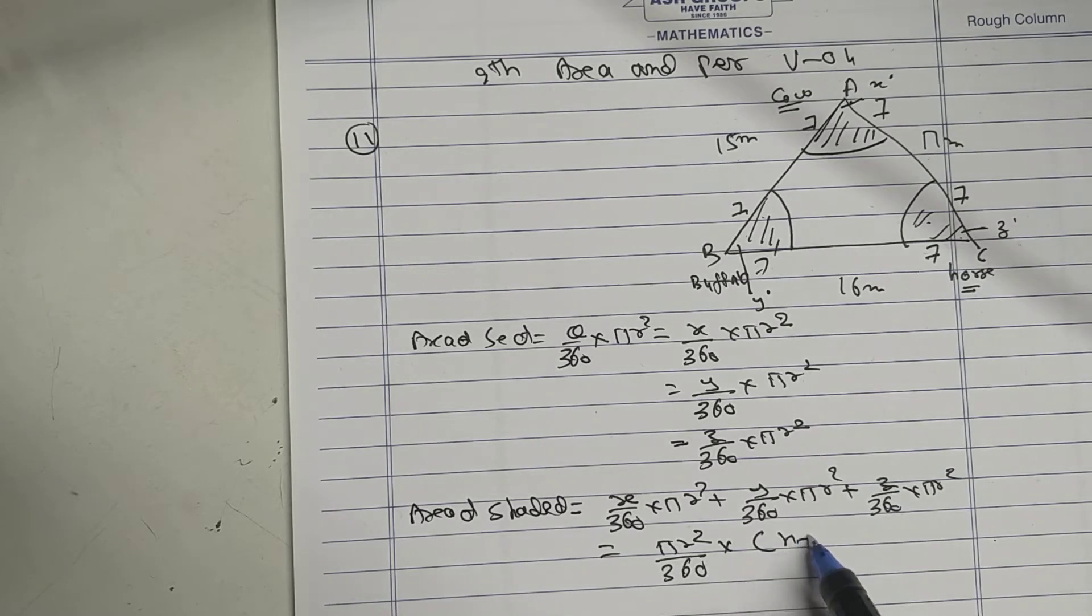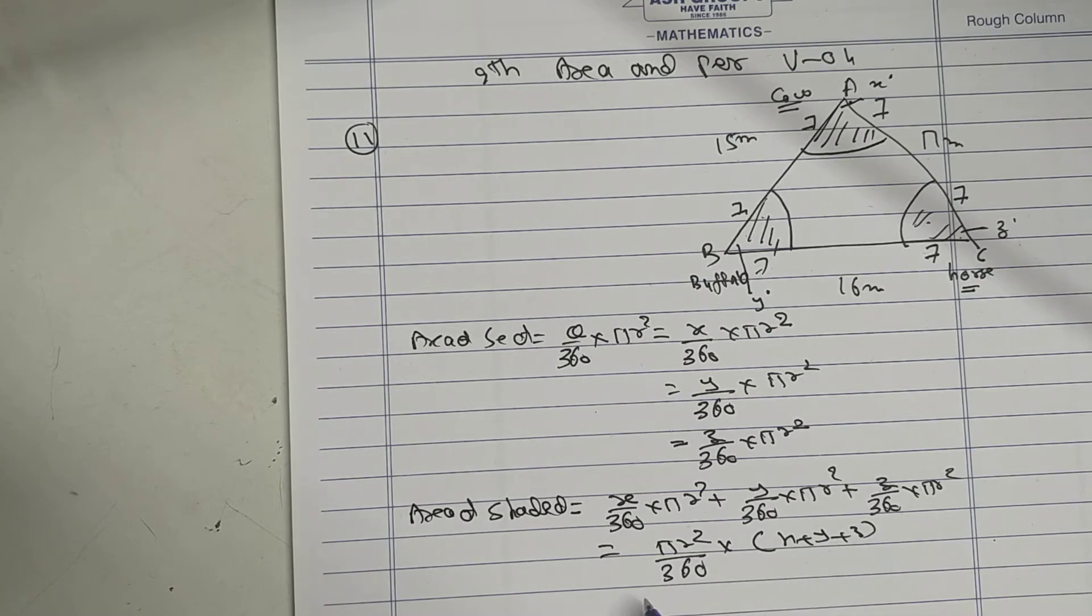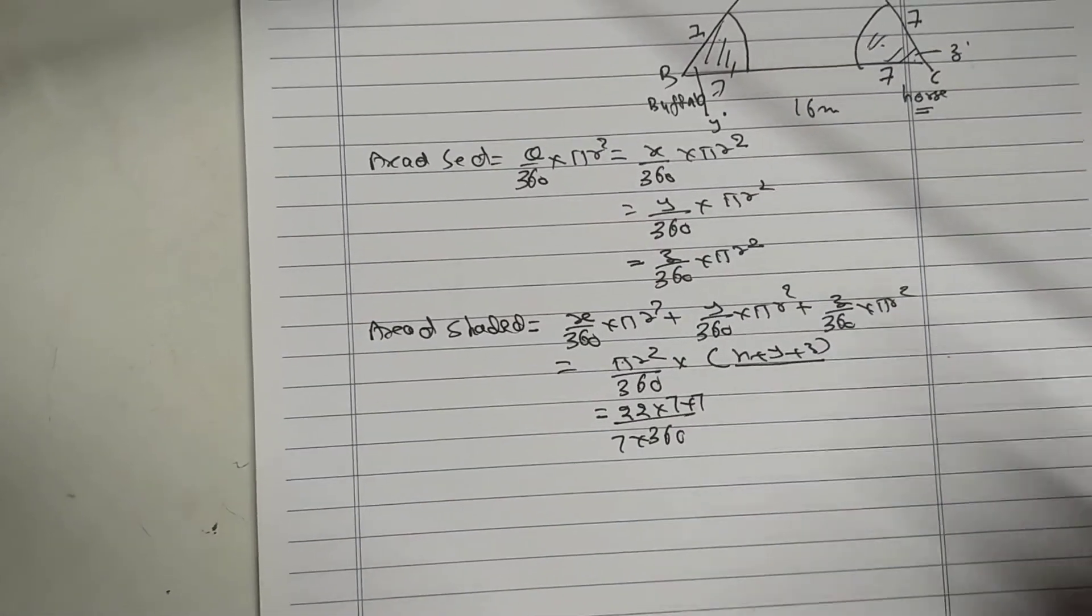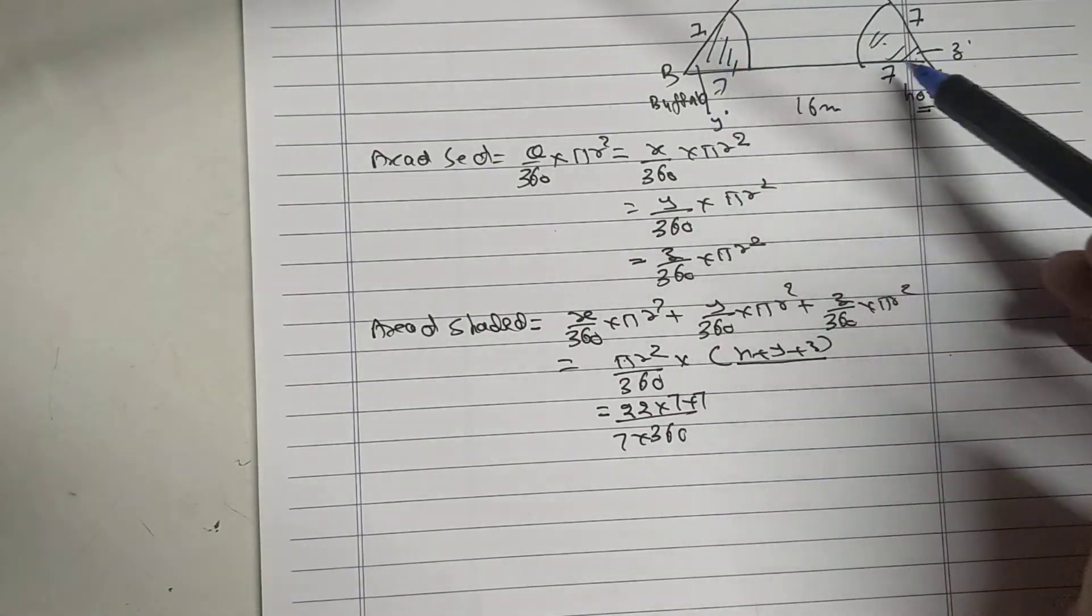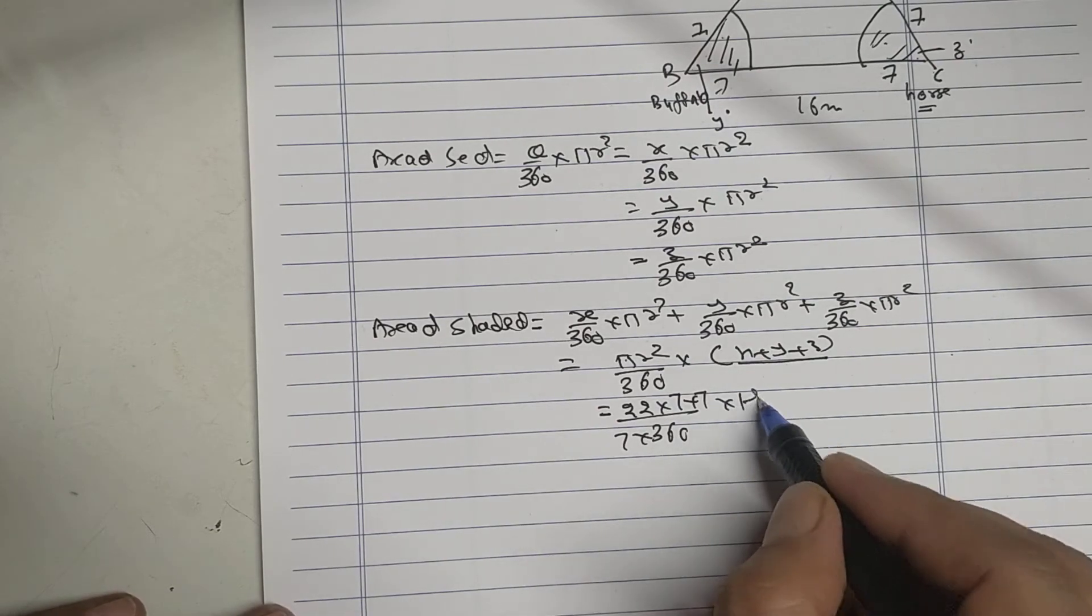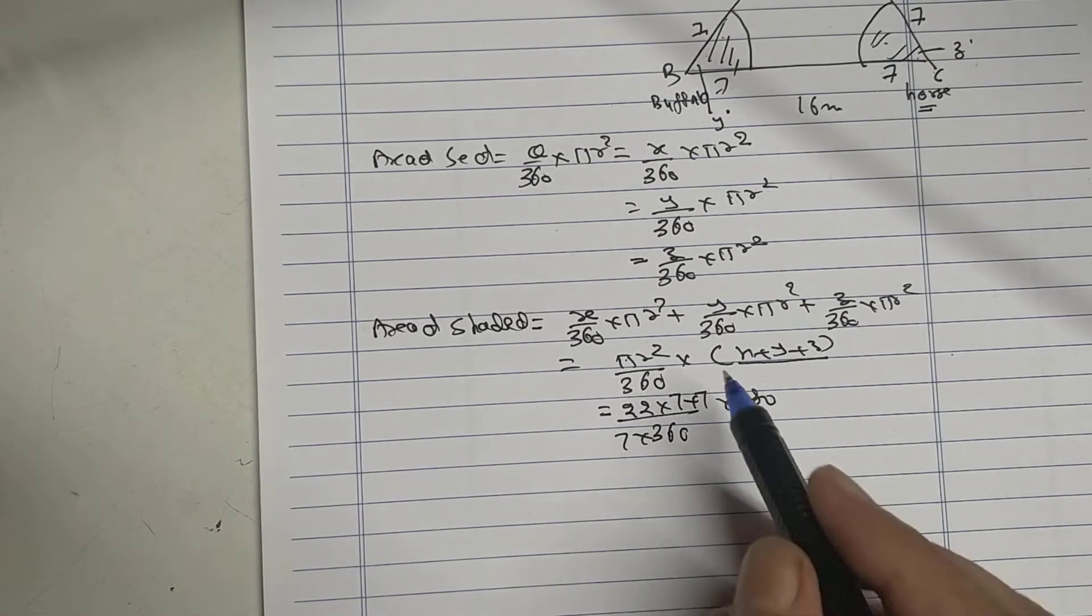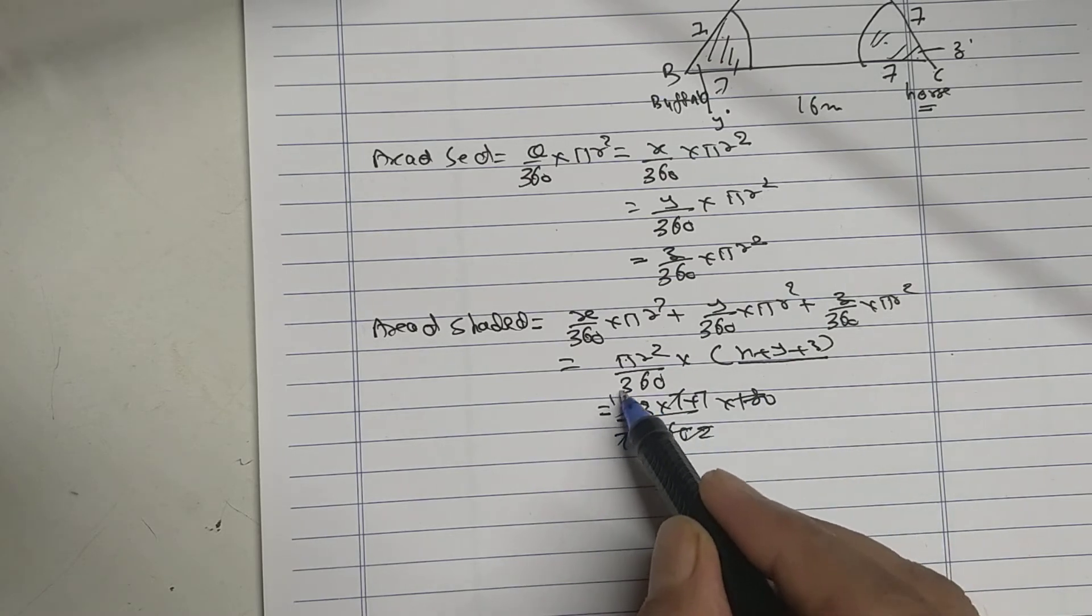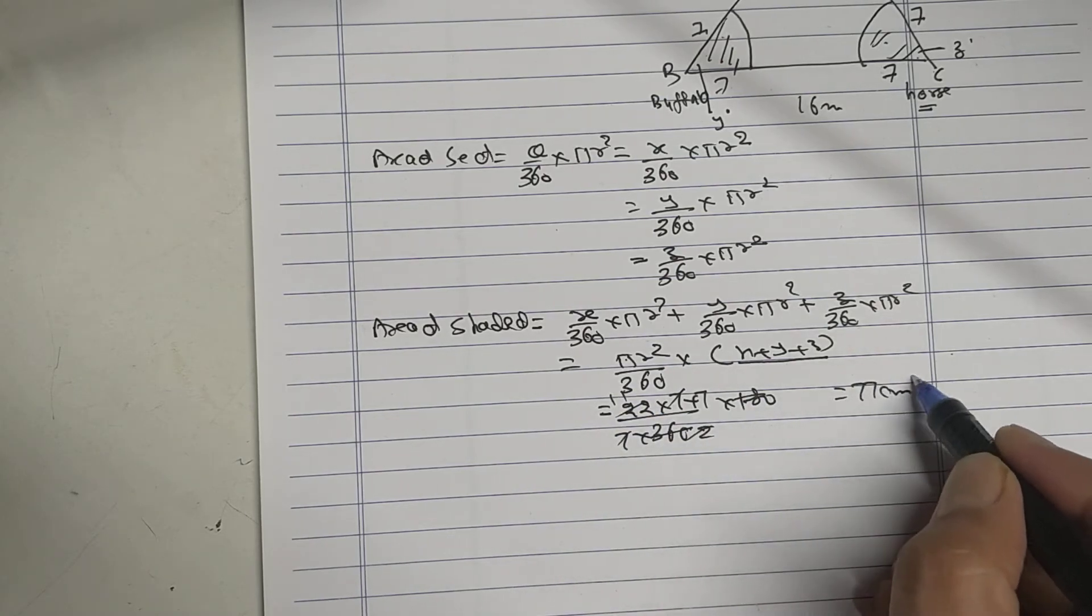Taking out common terms: (x+y+z)/360 × πr². Now π is 22/7, radius is 7. You see that x+y+z equals angle A plus angle B plus angle C, which is 180 degrees. Seven cancels, 180/2 is 90, equal to 77 meter square.